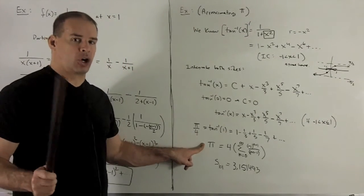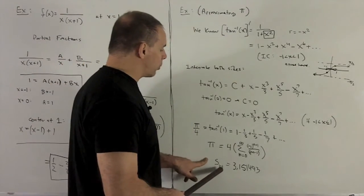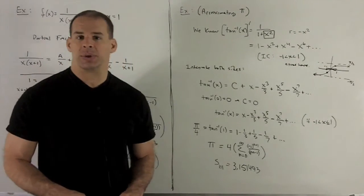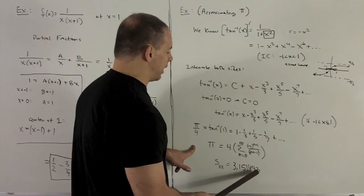Only catch is it converges very slowly. So if you were to take the first 101 terms, okay, I went to the computer and did this, we get 3.151493, whatever. Okay, notice,